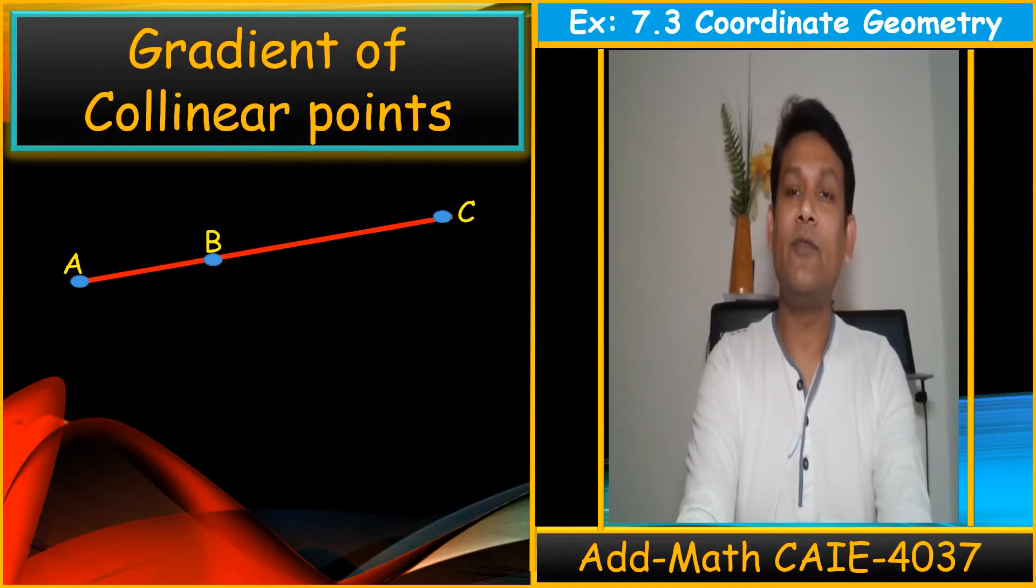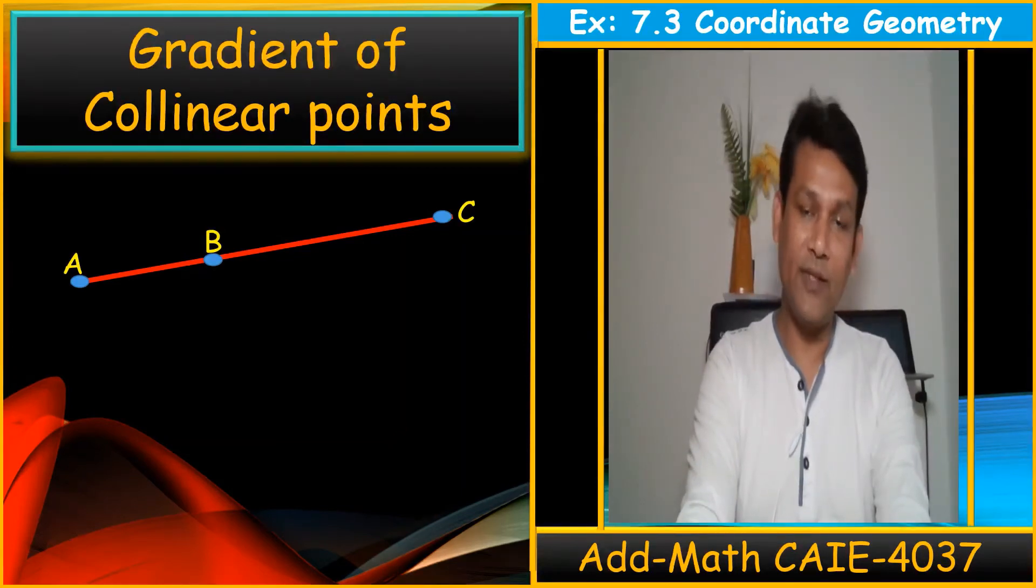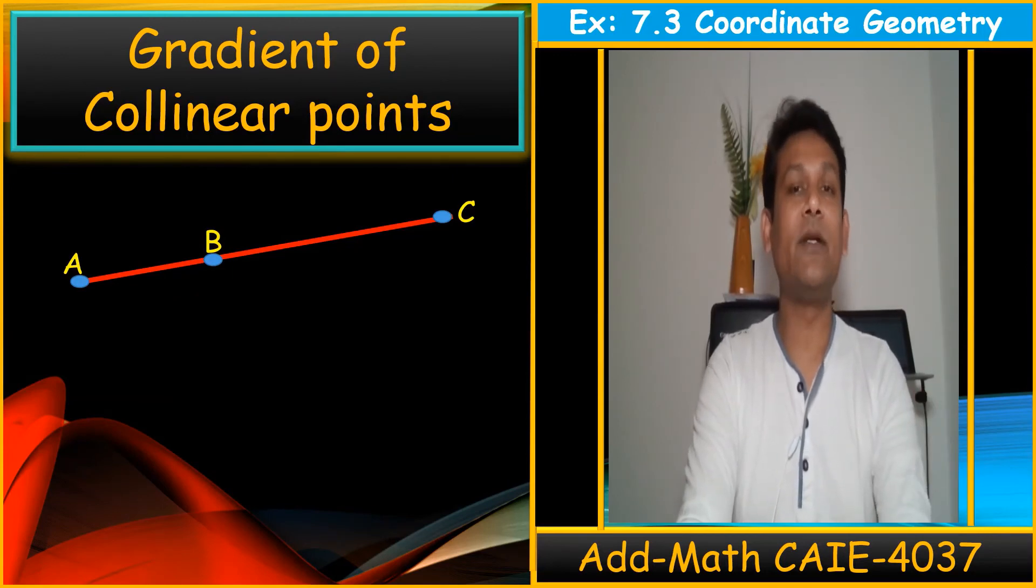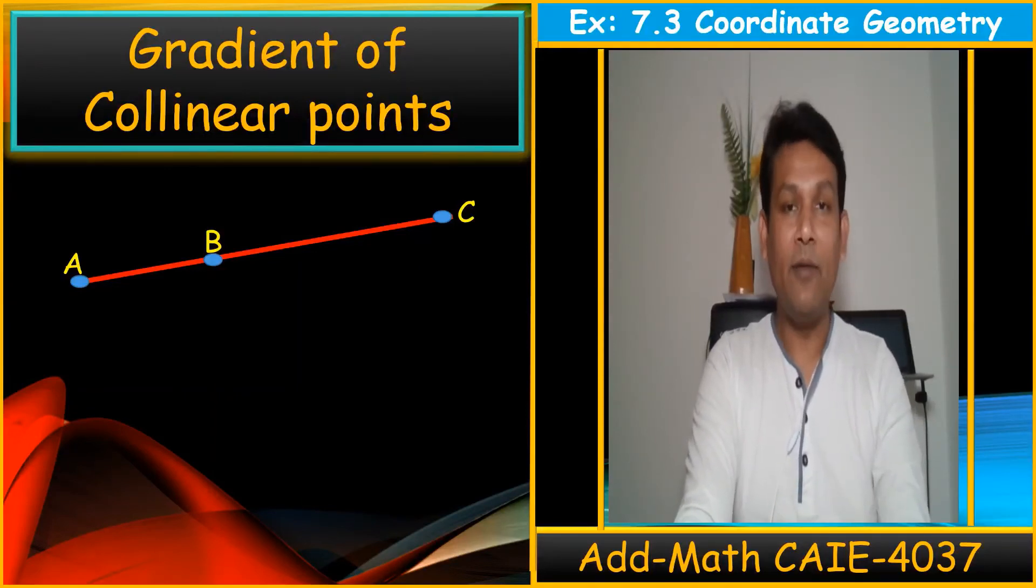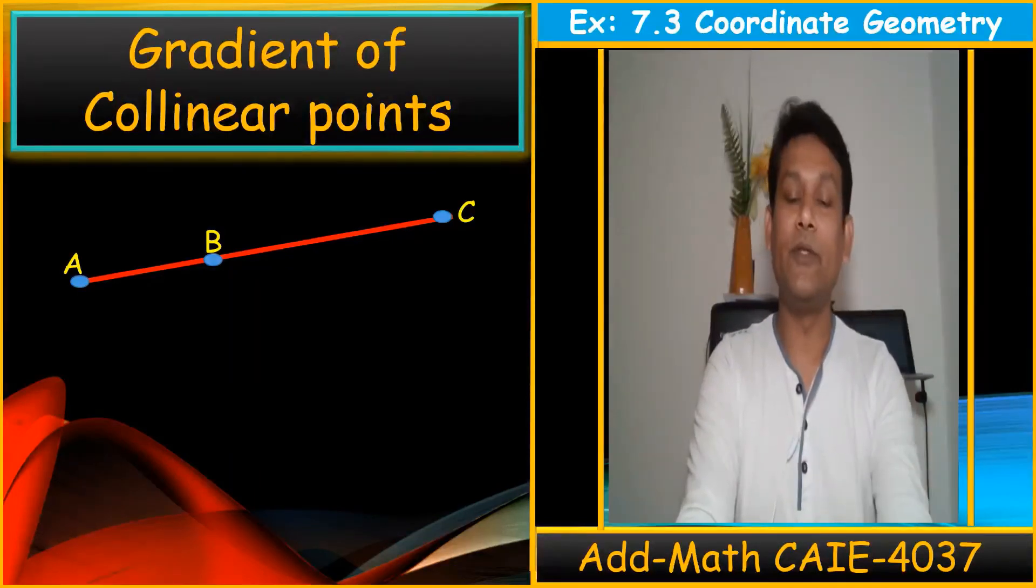We also have collinear points in exercise 7.3. You can see A, B, and C, three coordinates are given and all points are on a straight line. So these points which are on the straight lines are called the collinear points. And the collinear points does not mean this, that B is a midpoint of AC. But normally all the points on a straight line are called collinear points.